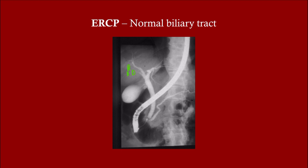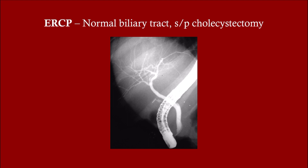Here's your normal biliary tract. So here you have the right hepatic duct and the left hepatic duct — easy to know because they're in the liver. These join together to form the common hepatic duct, and then once that joins with the cystic duct, what we have is the common bile duct. The pancreatic duct comes in and joins the common bile duct very close to the ampulla of Vater, draining into the descending part of the duodenum.